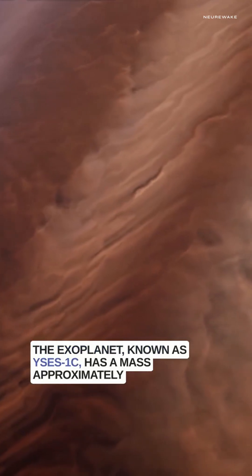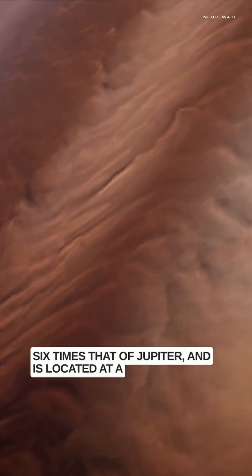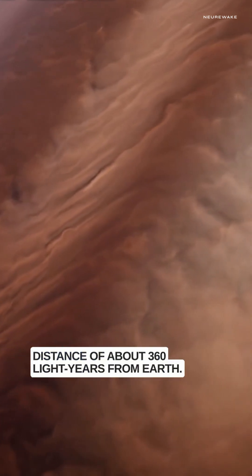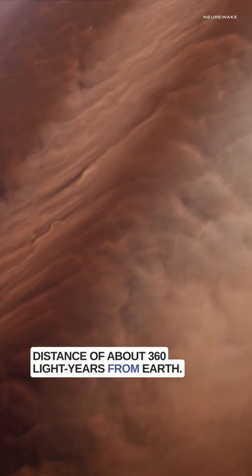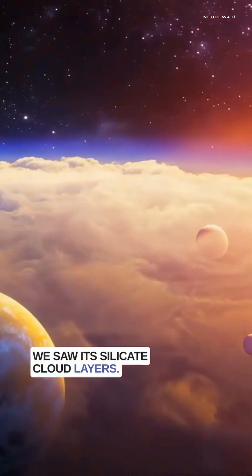The exoplanet, known as YCS1C, has a mass approximately six times that of Jupiter and is located at a distance of about 360 light-years from Earth. Thanks to the James Webb Space Telescope, we saw its silicate cloud layers.